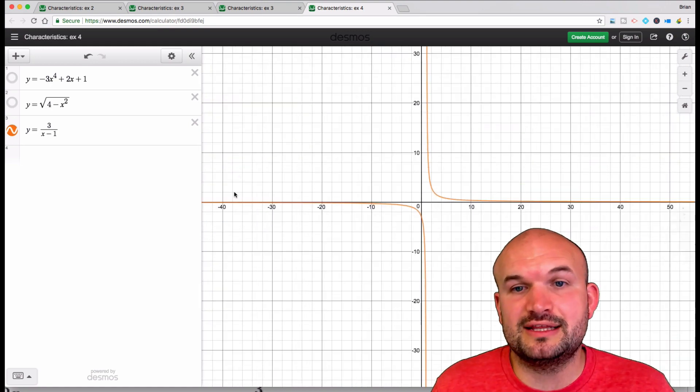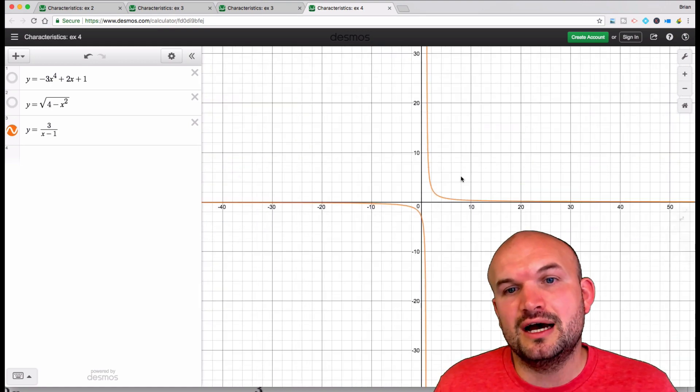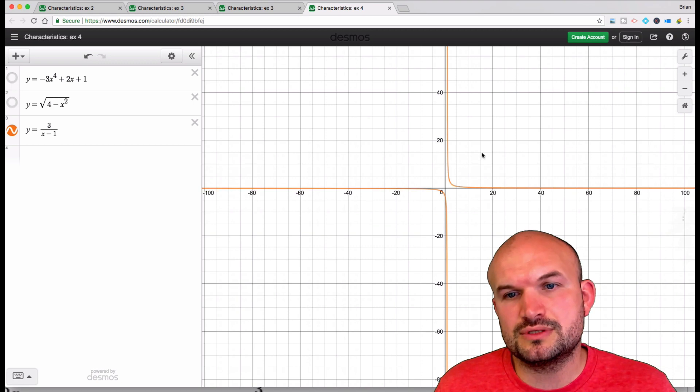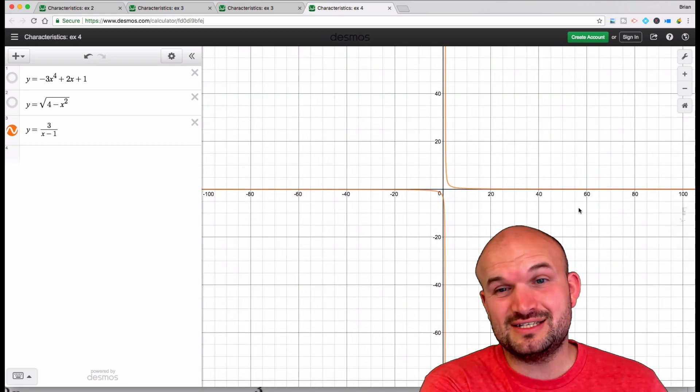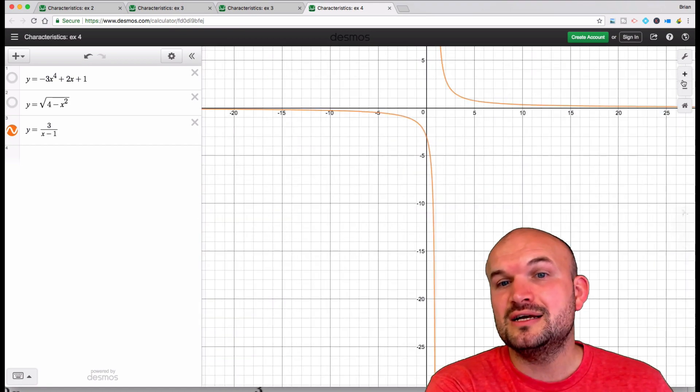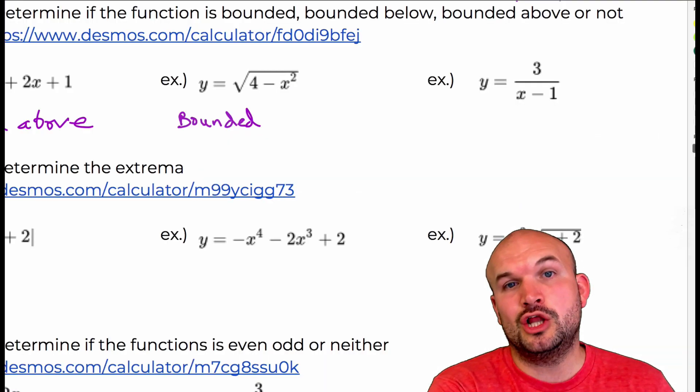But as we zoom out, you can see that this graph is continually going up and going down. So therefore, there is no absolute max or absolute min. So therefore, this graph would be what we call not bounded.